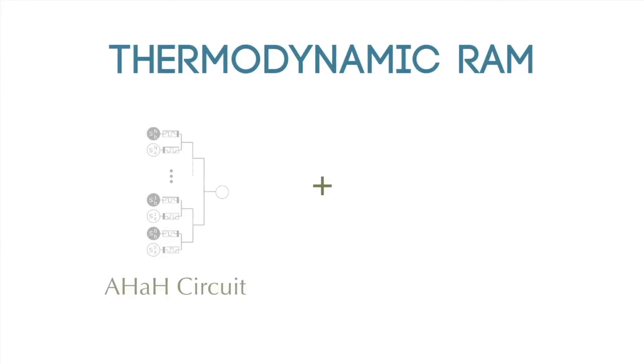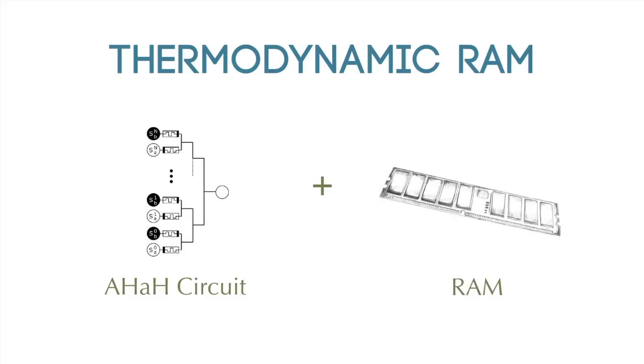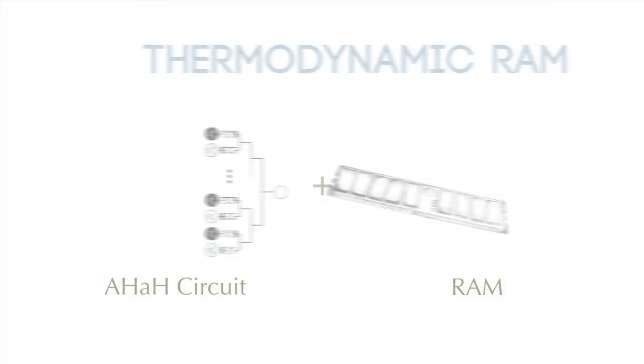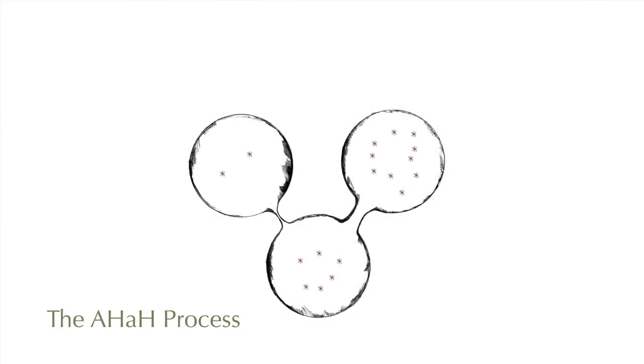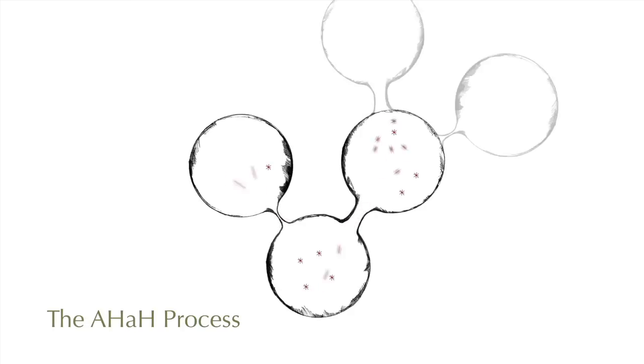Thermodynamic RAM is the combination of two things: the AHA circuit and random access memory. When you put these two things together, you end up with a general-purpose fabric that allows synapses to interact with each other. The act of accessing Thermodynamic RAM is the act of processing — the act of adaptation or learning. Memory and processing have become one.